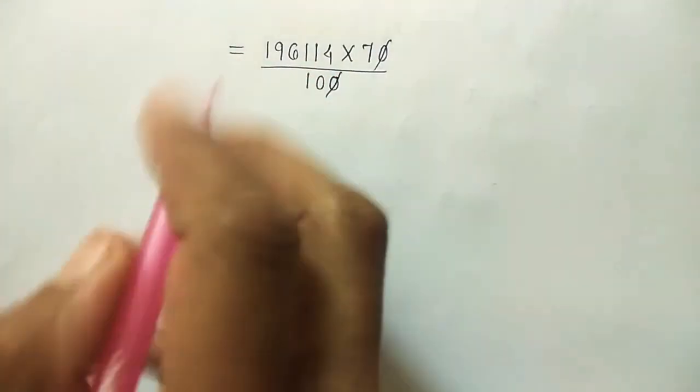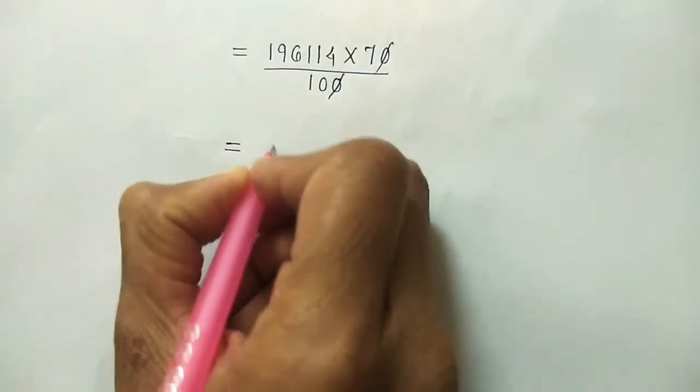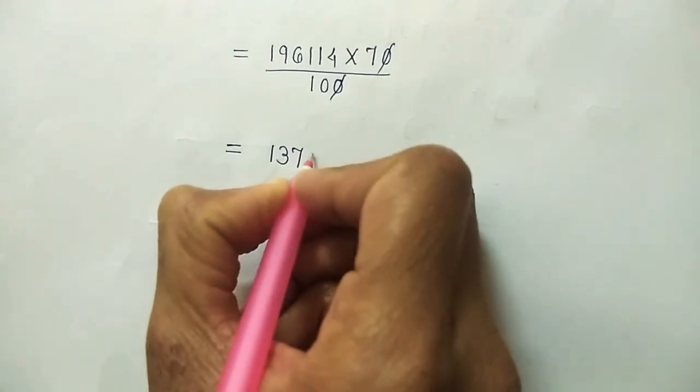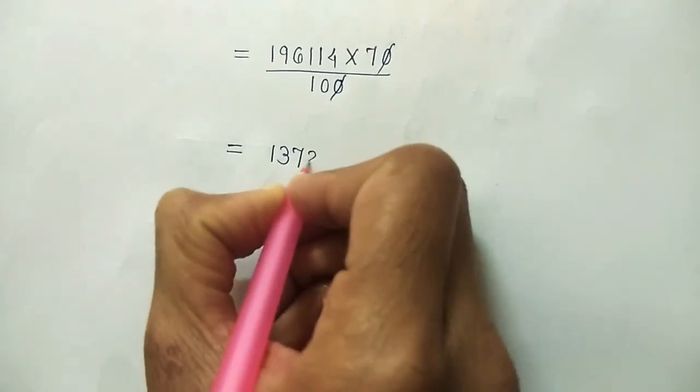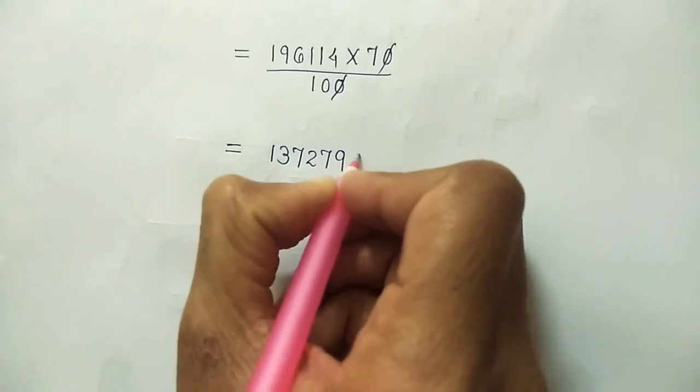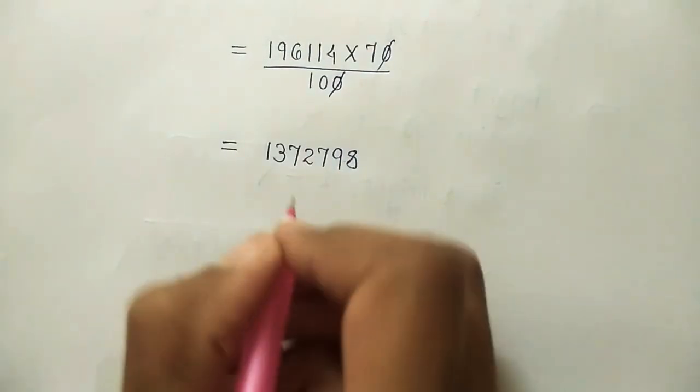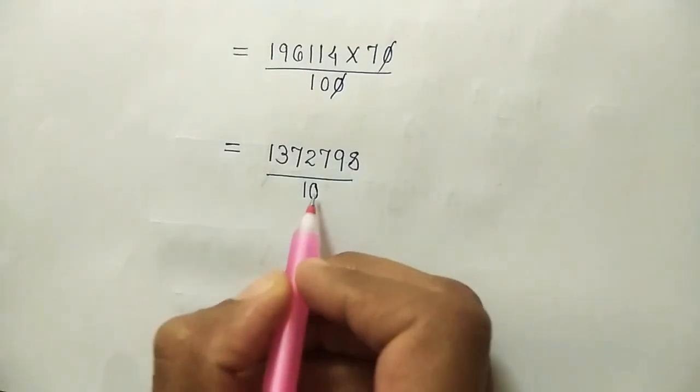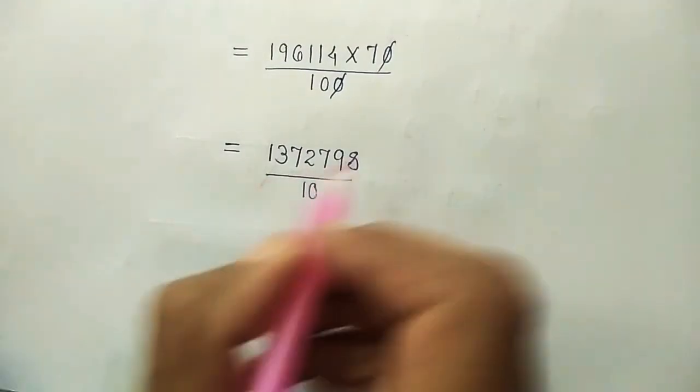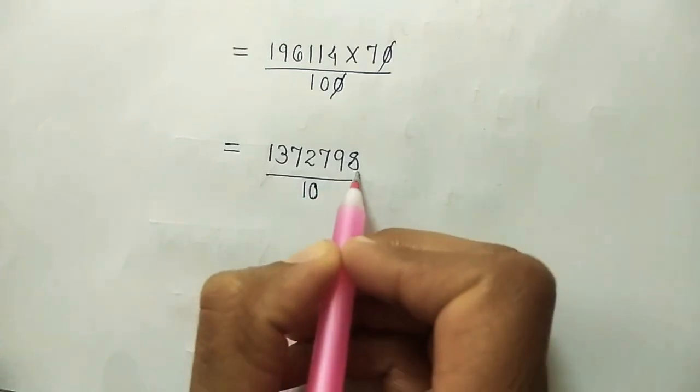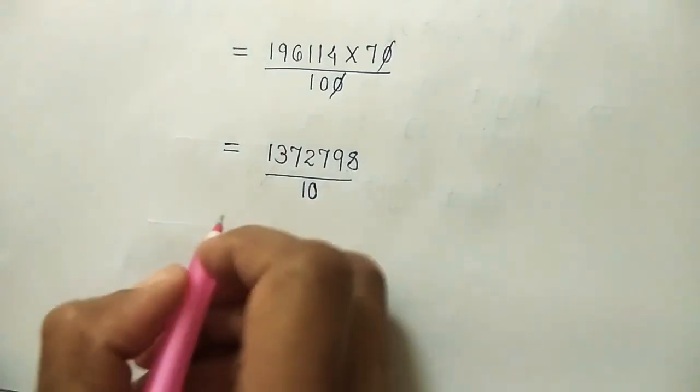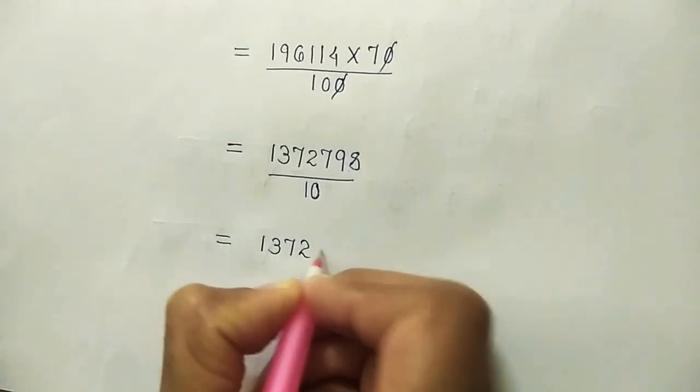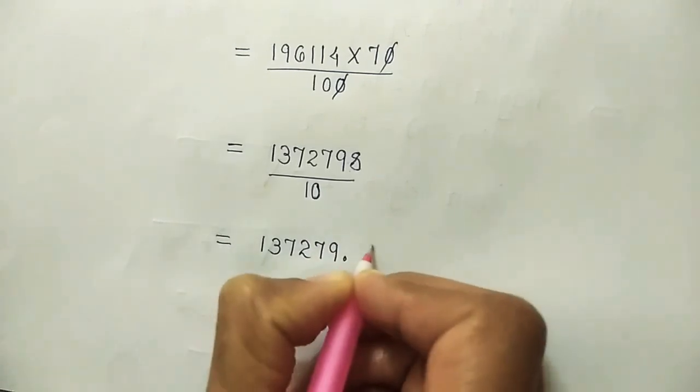Multiplication of this will give you 1372798. Denominator we have 10. Which means now we will put decimal form. 10 in the denominator means after 1 digit we'll put decimal point. So it will be 137279.8.